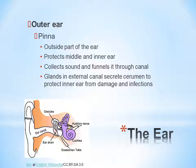Glands in the external canal secrete cerumen, or earwax, which protects the inner ear from damage and infections.